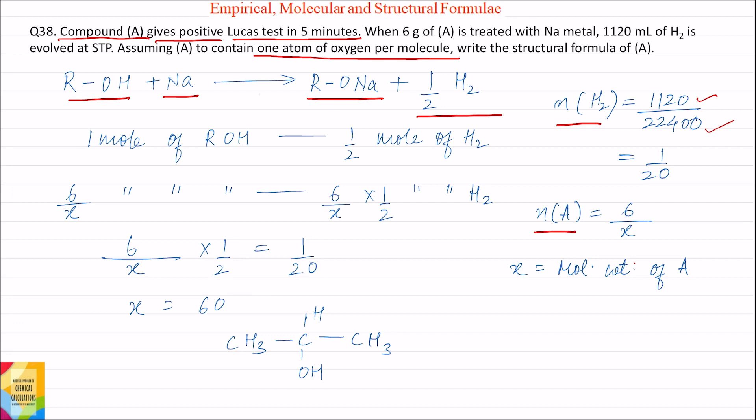Moles of A equals weight of A divided by molecular weight of A. Weight of A is given as 6 grams, and we assume the molecular weight of A to be x. So x is the molecular weight of A.